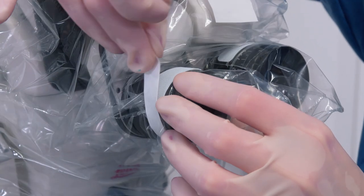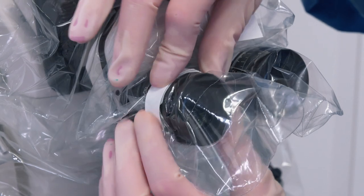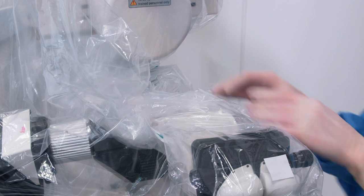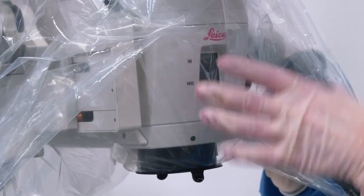Secure the drape using the velcro straps. Put the remaining drape inside the empty space. Make sure the drape is not covering the lens.